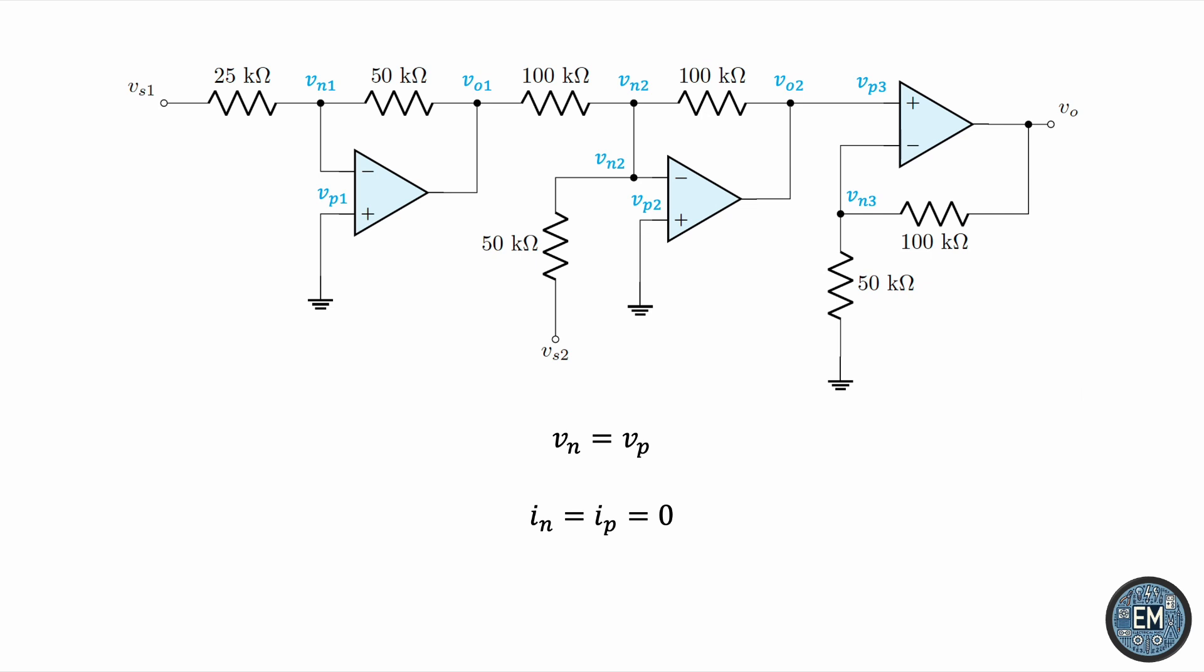So we'll have those two constraints on the side, and we'll start writing equations for op-amp 1, 2, and then 3. Starting with op-amp 1, notice that the non-inverting input is grounded, so VP1 must be 0. By the first constraint, this must be VN1 as well.